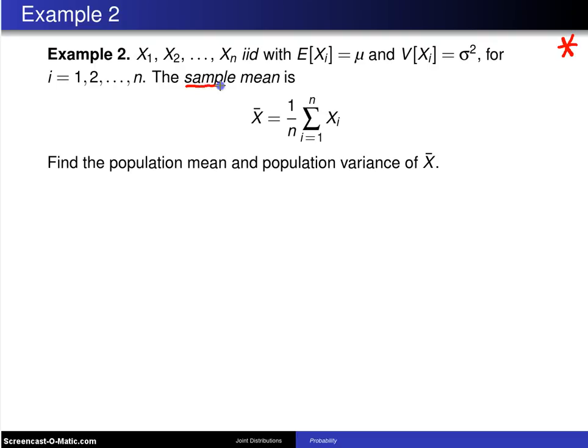Now, this sample mean is a fundamentally different creature from the population mean μ in the following respect. The population mean μ is a fixed constant. The sample mean x̄ is a random variable, and the reason it is a random variable is it is a function of n other random variables, so it varies from one sample to the next.